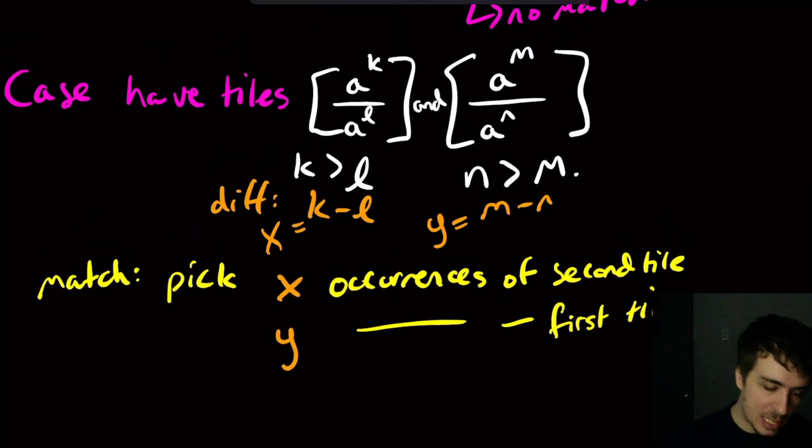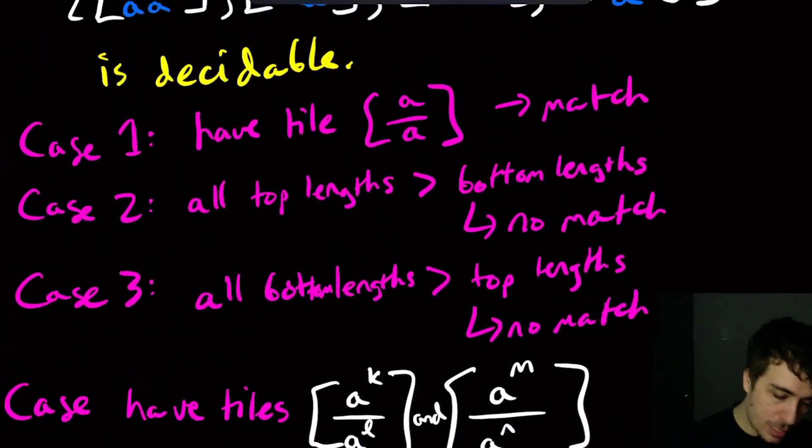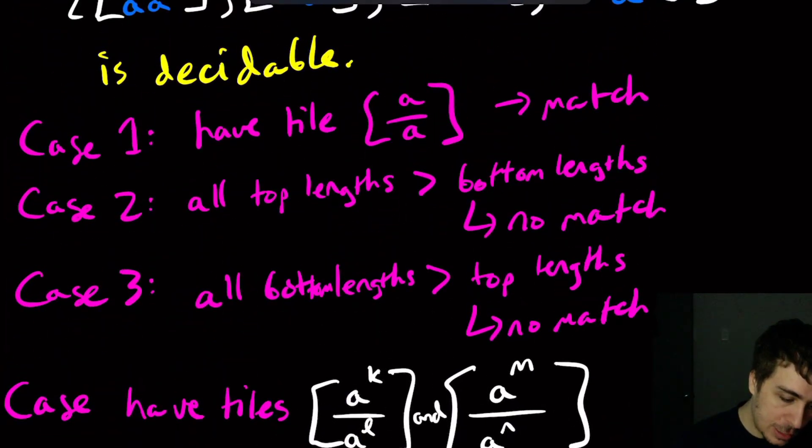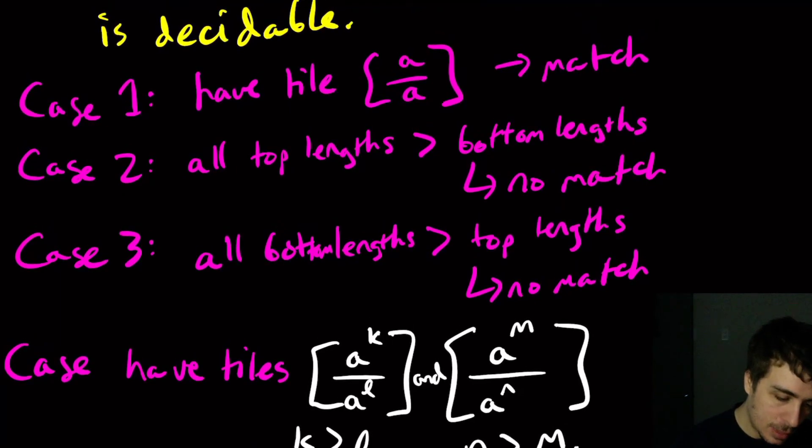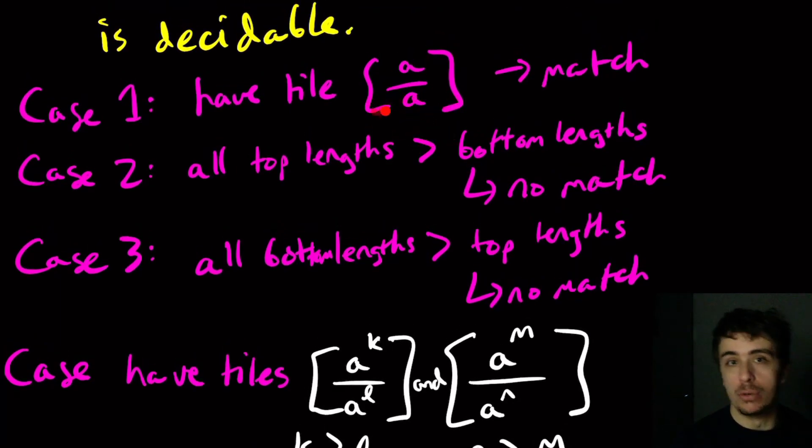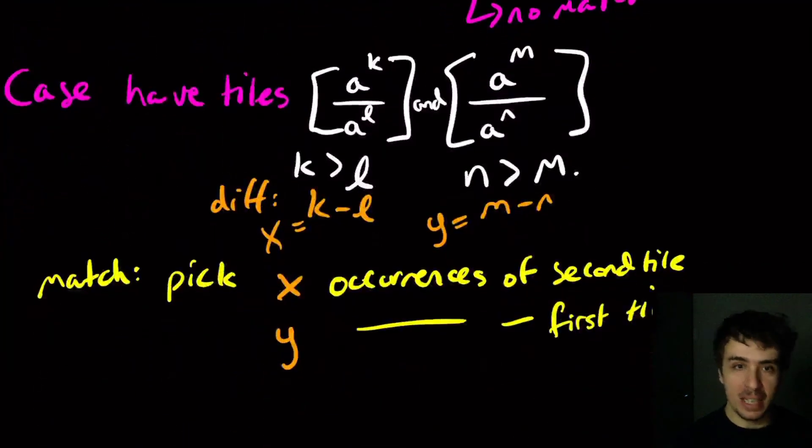And then therefore we have a match at that point. And so this problem is decidable because all that we need to do is to look at each one of these cases and figure out which one we're in. So this is just scanning through the tiles. That's easy. This is scanning through the tiles, scanning through the tiles, and again, scanning through the tiles. And there's only a finite number of occurrences of each tile to actually pick.